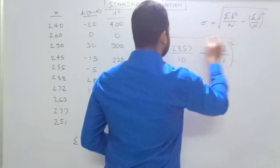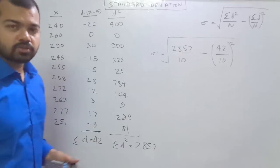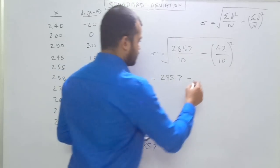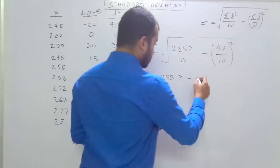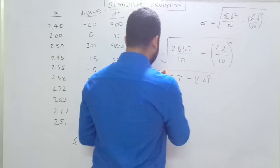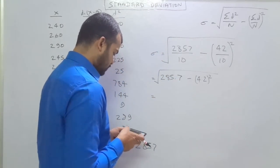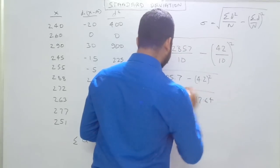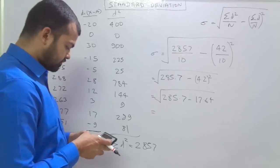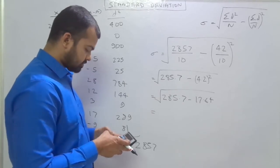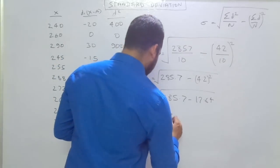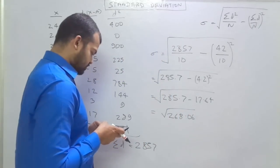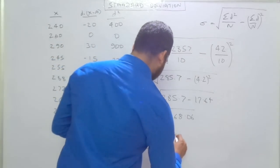Now we just solve with this equation. 285.7 minus 4.2 ka whole square. 285.7 minus 17.64. That is 268.06. So the under root value is 16.37.